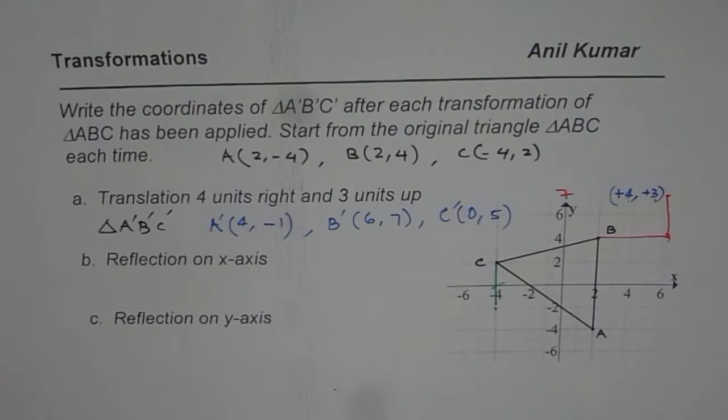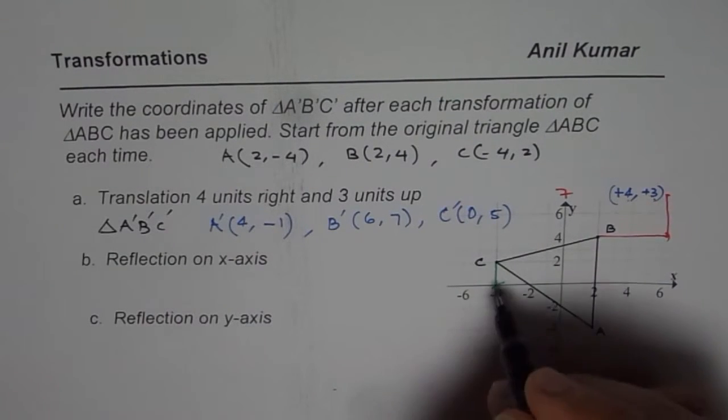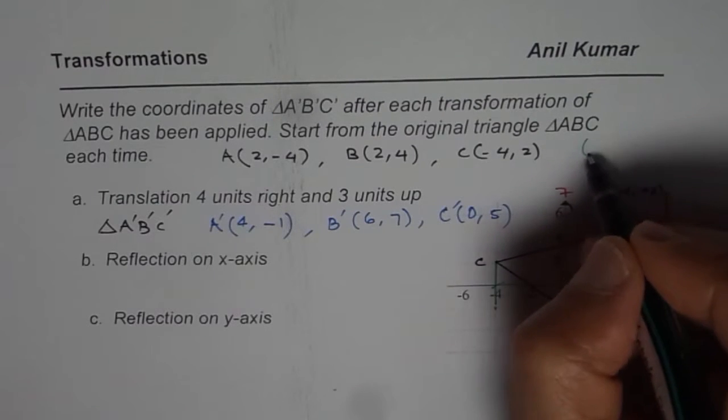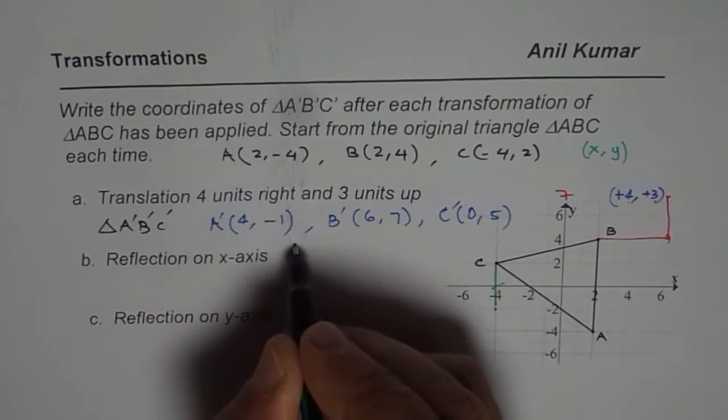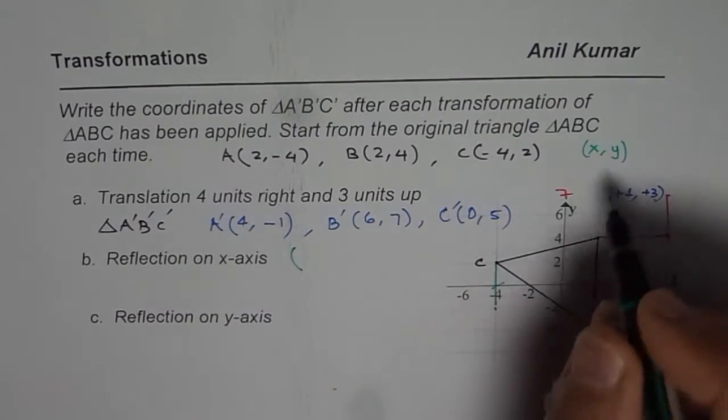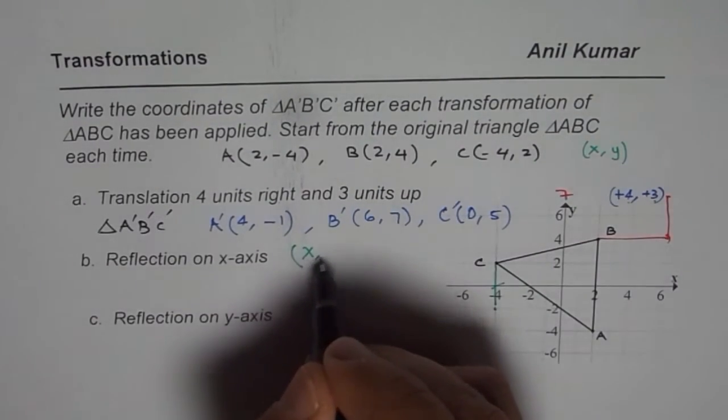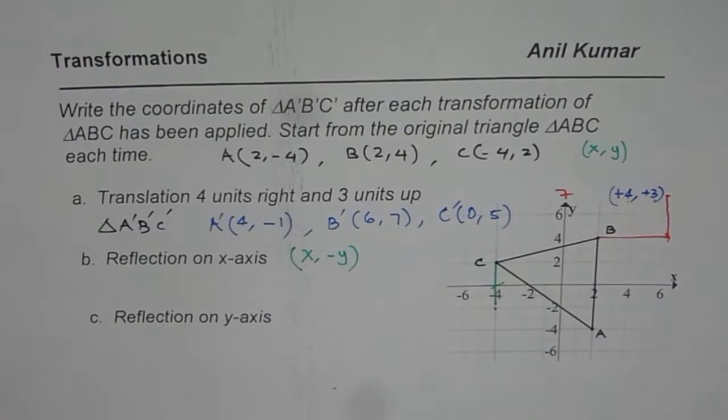In this transformation, the x value is the same. So if the original point is (x, y), then the point after this reflection will be: x value will remain as x and y will become -y.